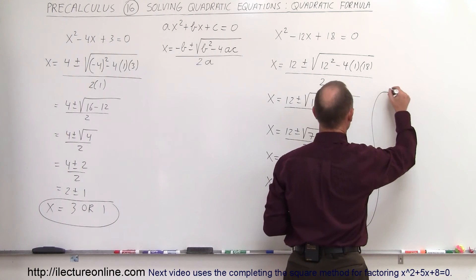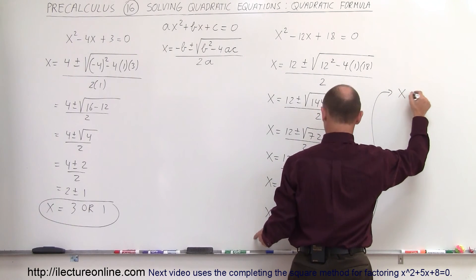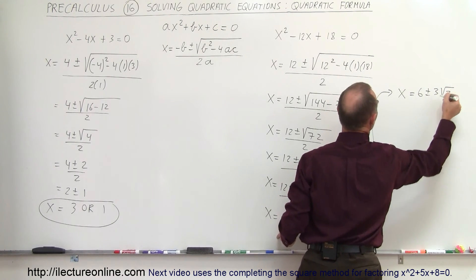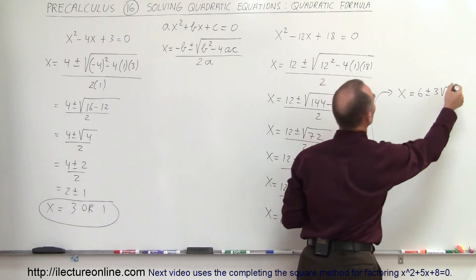So finally, let me give you some more room here. We can say that x is equal to 6 plus or minus 3 times the square root of 2. And that is about as good as we can write it.